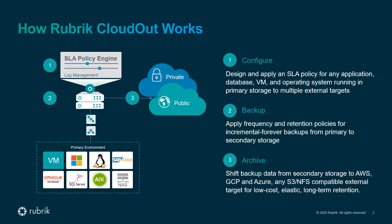Our customers leverage CloudOut in order to automate archival to public or private cloud tiers. Essentially, we define an archival location and its associated retention settings within an SLA domain. For example, maybe we want to archive any backups older than 30 days up to an AWS S3 bucket. This frees up valuable Rubrik capacity. As backups age out over that 30-day threshold, they will be automatically archived off to S3. All the data still remains instantly accessible, which allows for super-fast recovery and global predictive search capabilities.